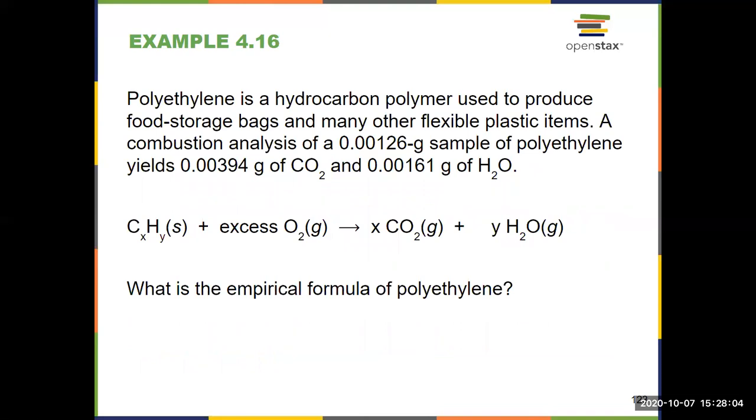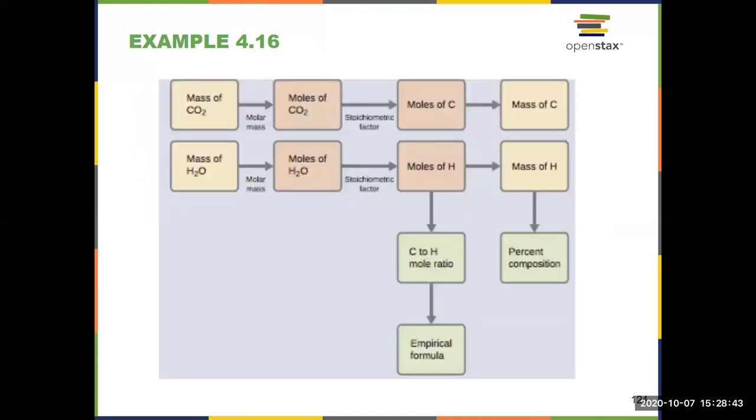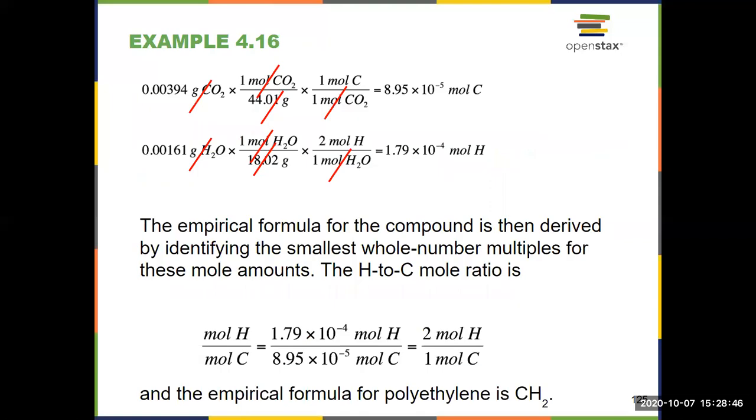So here's what this one might look like. This is a lengthy problem because we're taking it all the way to an empirical formula. We're given a polymer and a combustion analysis of 0.00126 grams of polyethylene, which produces 0.00394 grams of CO2 and 0.00161 grams of H2O. Figure out the moles of those CO2 and H2O using the formula mass, figuring out the simplest ratio of carbon to hydrogen, and then you're given your empirical formula. Strategy shown on slide 124, answer on 125. Simple molecular formula of CH2.